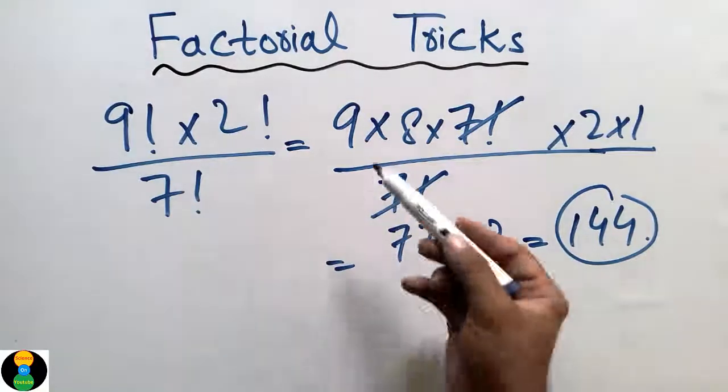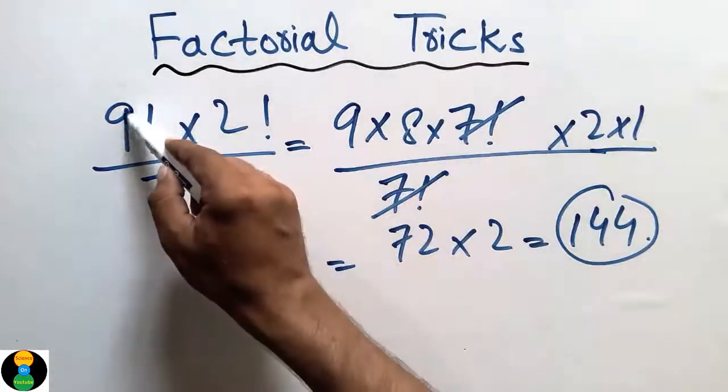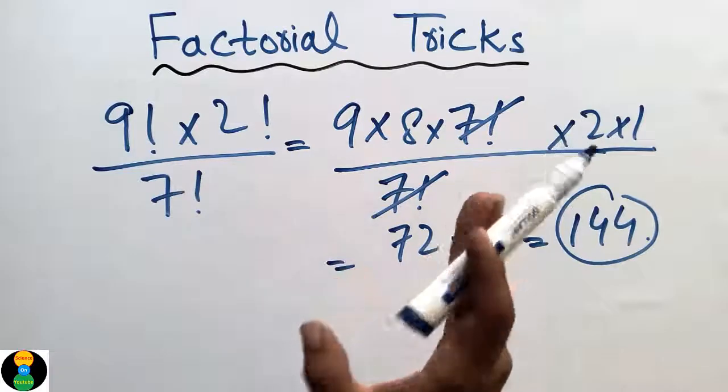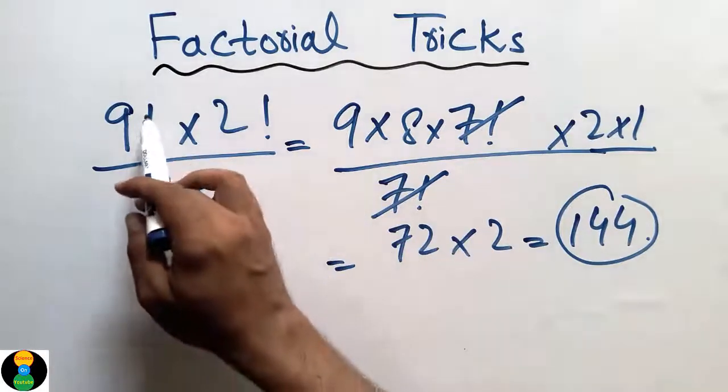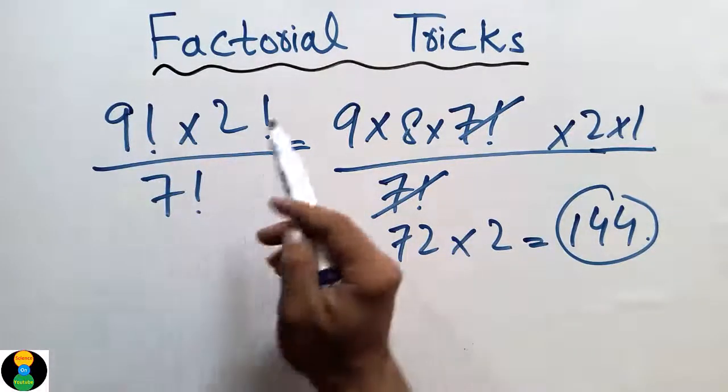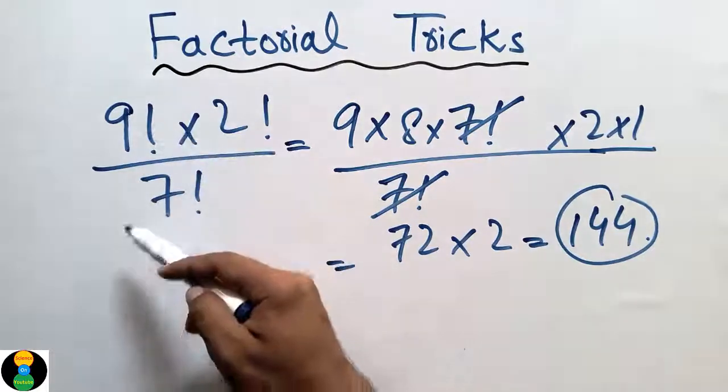How? Just expand the upper or lower up to the factorial which is given to us, either in numerator or denominator. Just cancel this out with the numerator and denominator, and then solve.